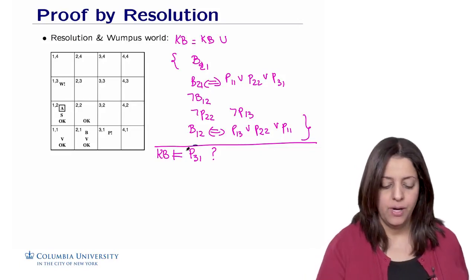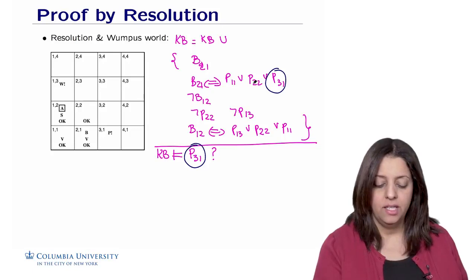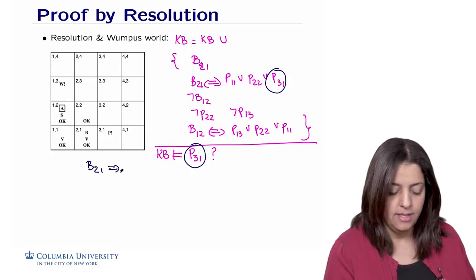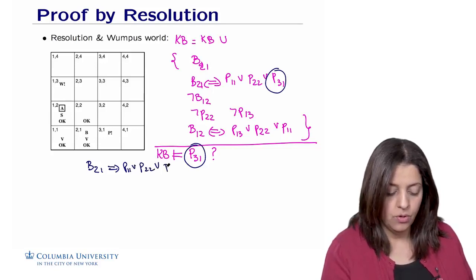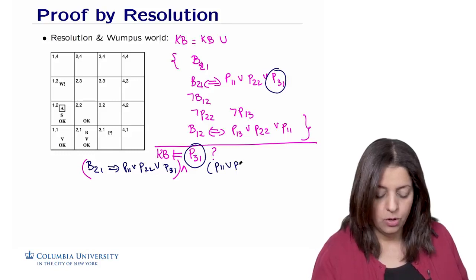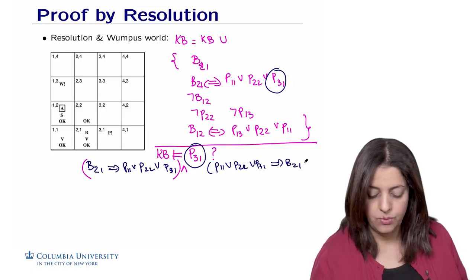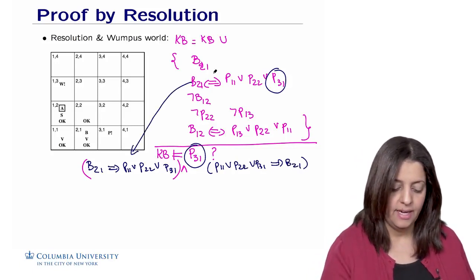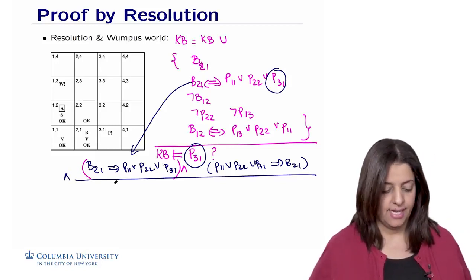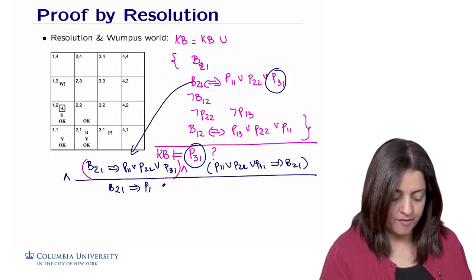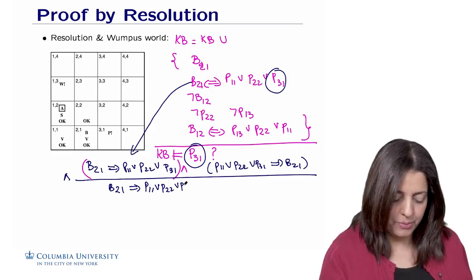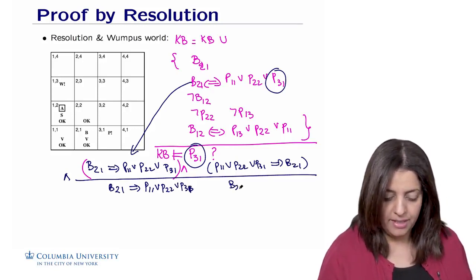The first step is to find where P-3-1 appears. It appears in the rule: B-2-1 if and only if P-1-1 or P-2-2 or P-3-1. We split this biconditional into two implications: B-2-1 implies (P-1-1 or P-2-2 or P-3-1), and (P-1-1 or P-2-2 or P-3-1) implies B-2-1. We then pick the second direction strategically to use B-2-1, which we know is true from the knowledge base.